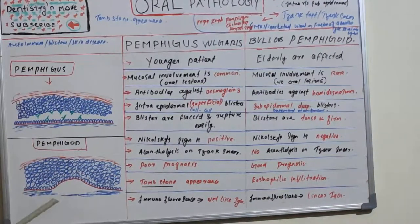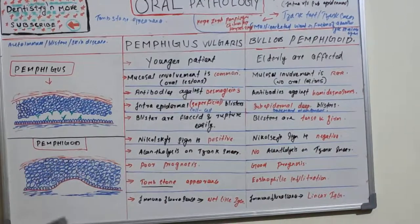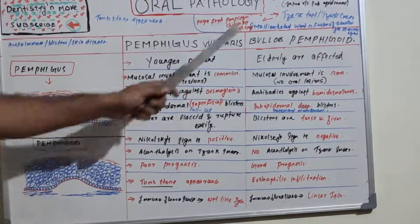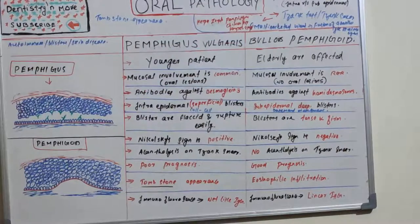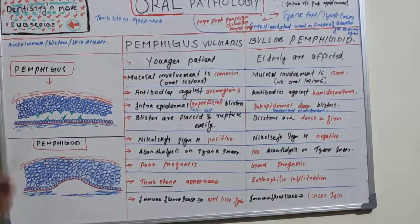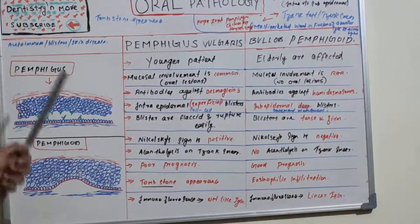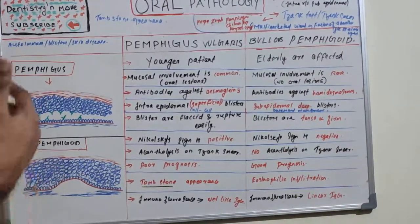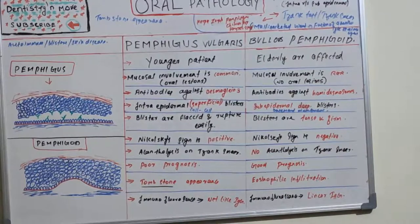So that is all about pemphigus vulgaris and bullous pemphigoid. The key difference is intra-epidermal versus sub-epidermal blister formation. Once you understand that concept, you can apply it to understand all the differences, as well as Nikolski sign, Tzanck test, Tzanck cells, and tombstone appearance — all very commonly asked topics. If you have any doubts, please mention them in the comment box, and if you'd like lectures on particular topics, please comment. I'll come up with a new topic. Thank you.